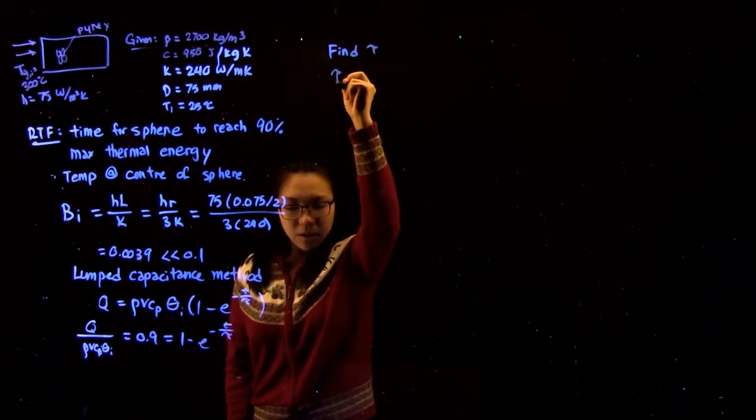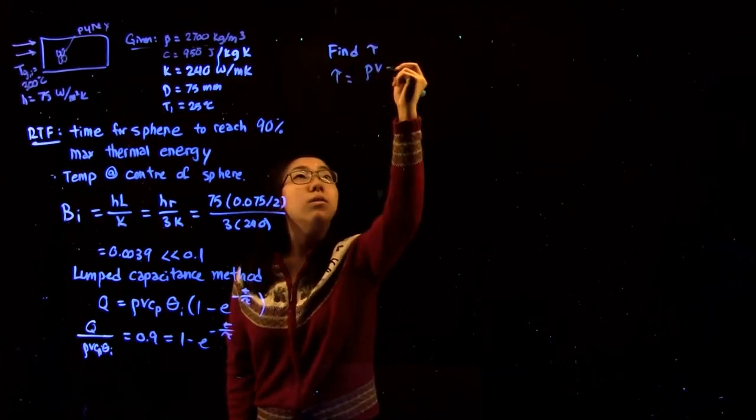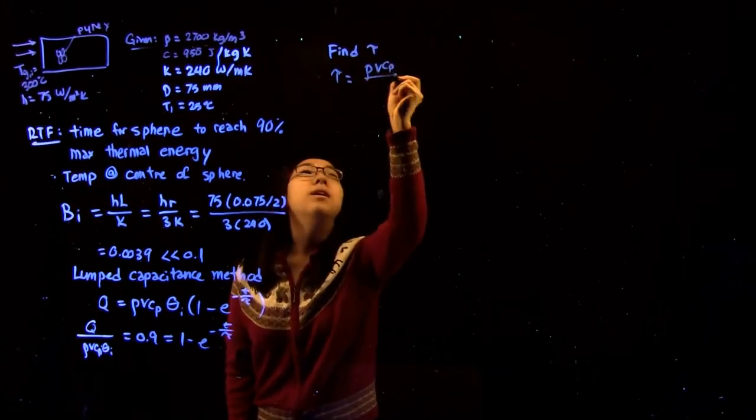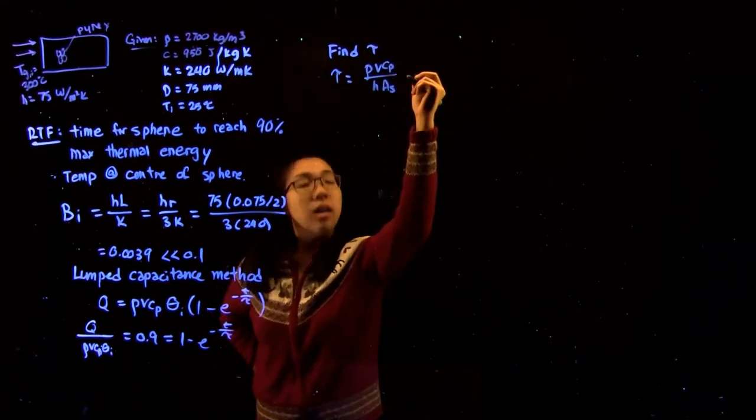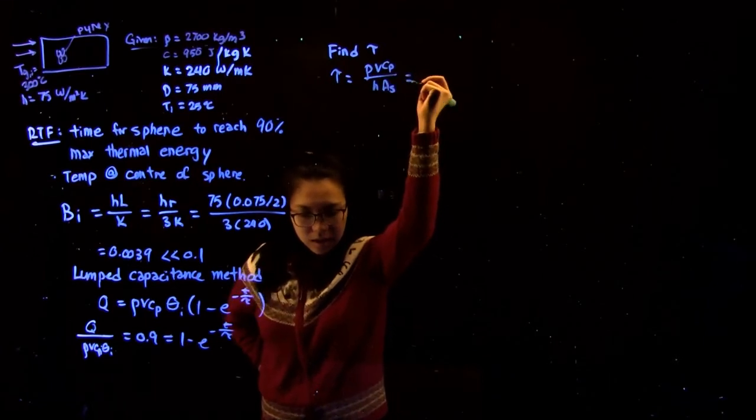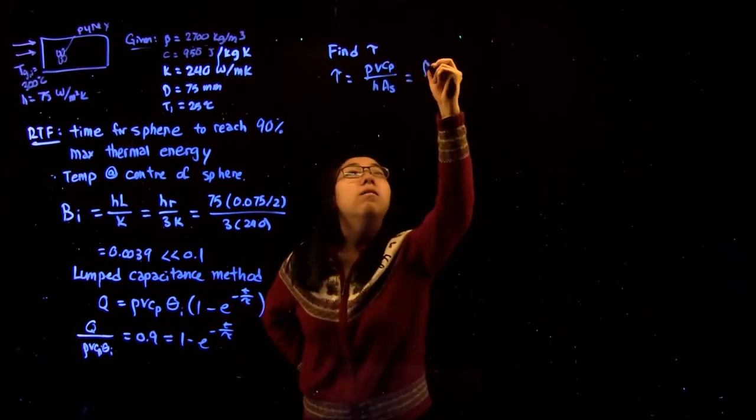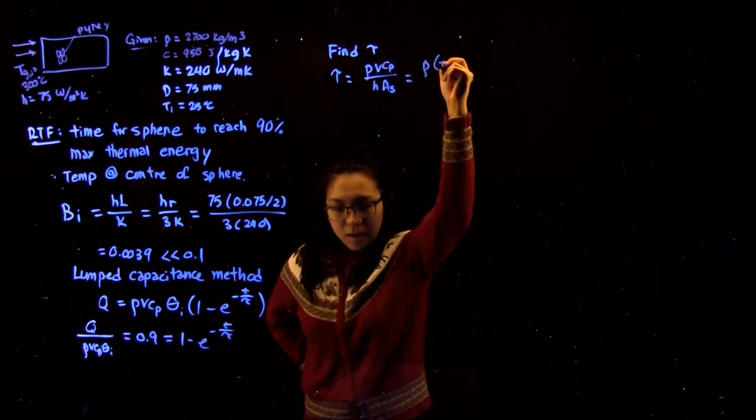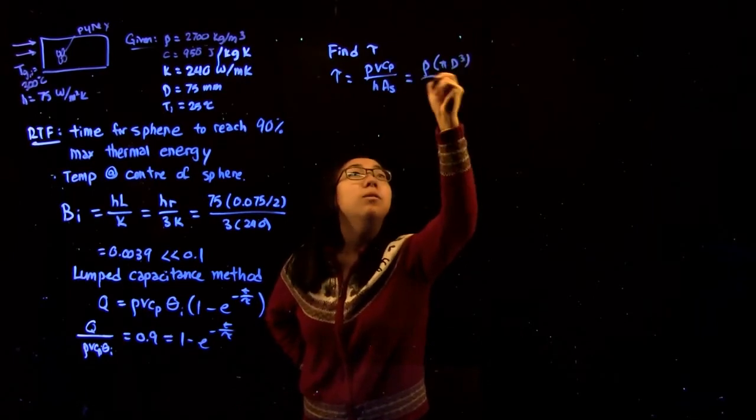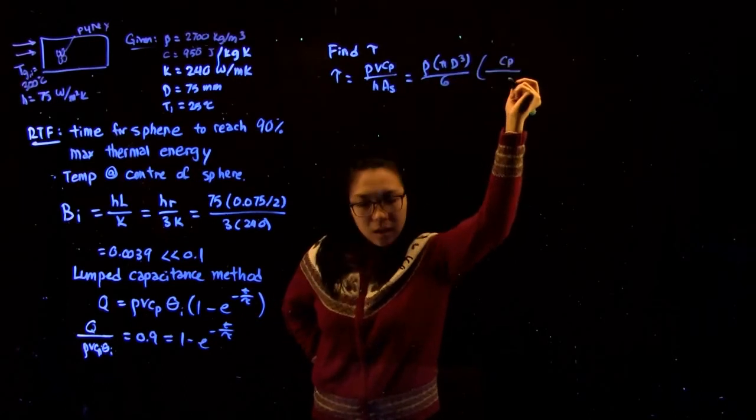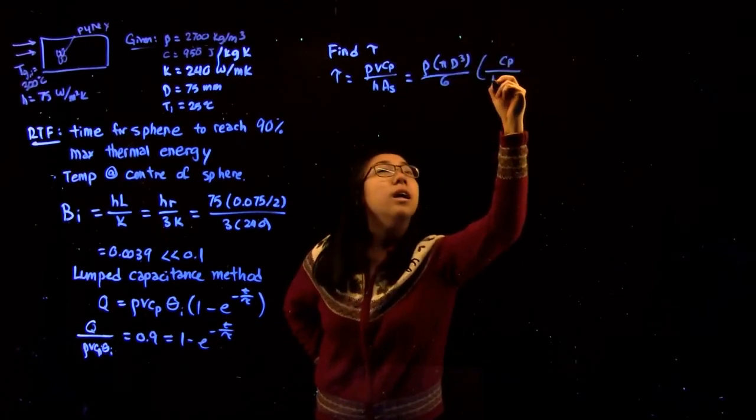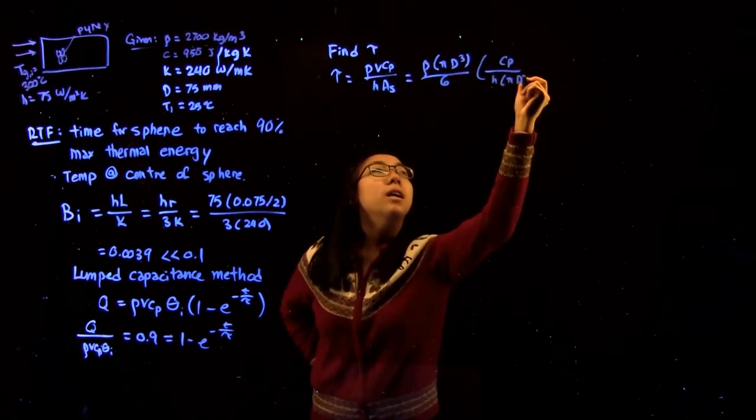The equation for that is tau equals rho V Cp over H times A_s, giving us rho times pi D cubed over 6 times Cp over H pi D squared, the surface area.